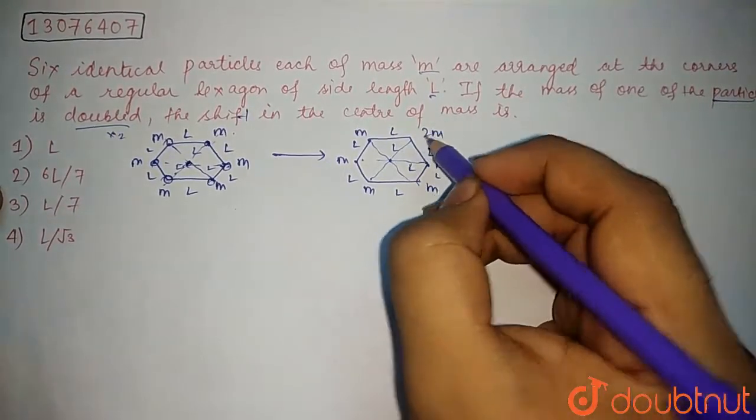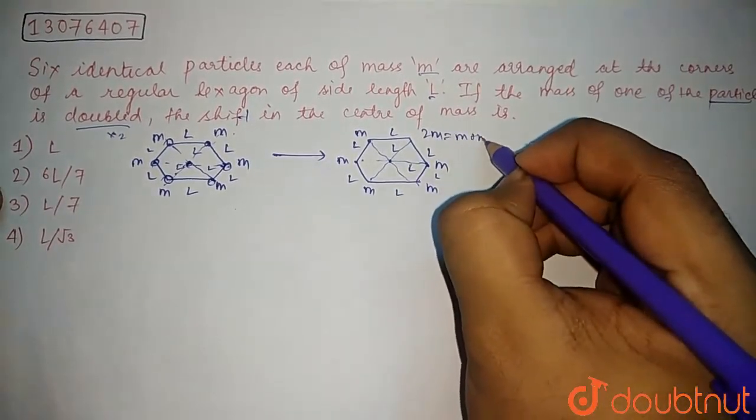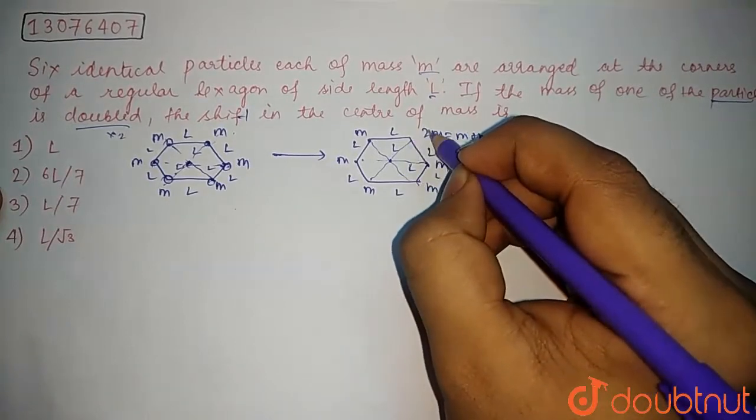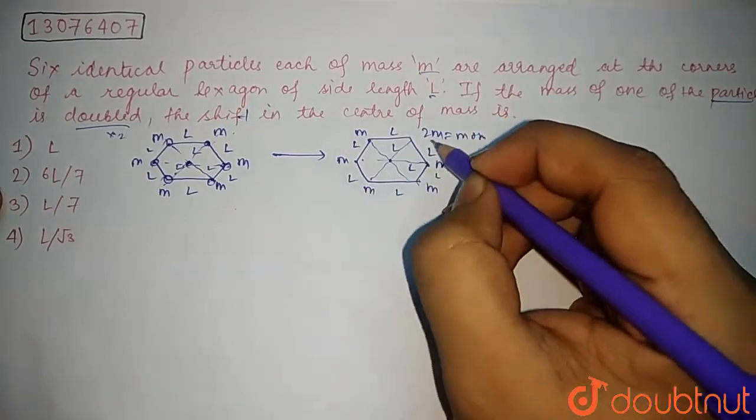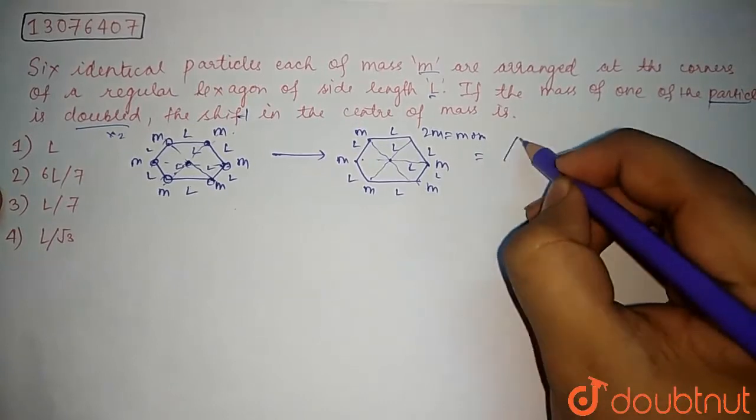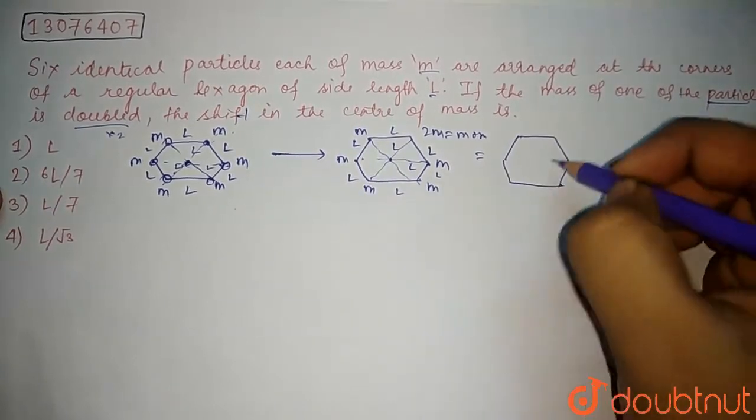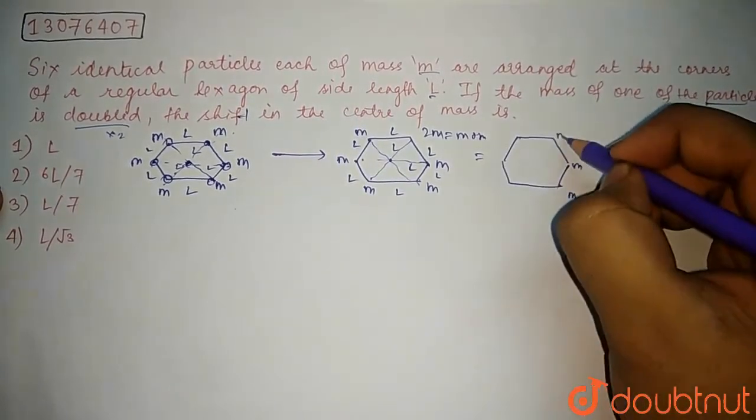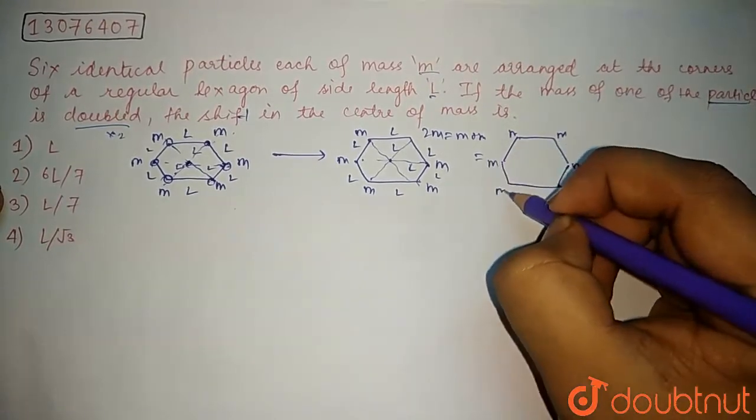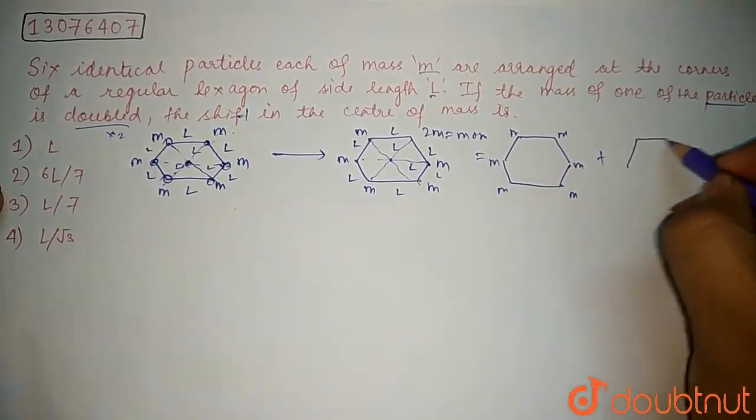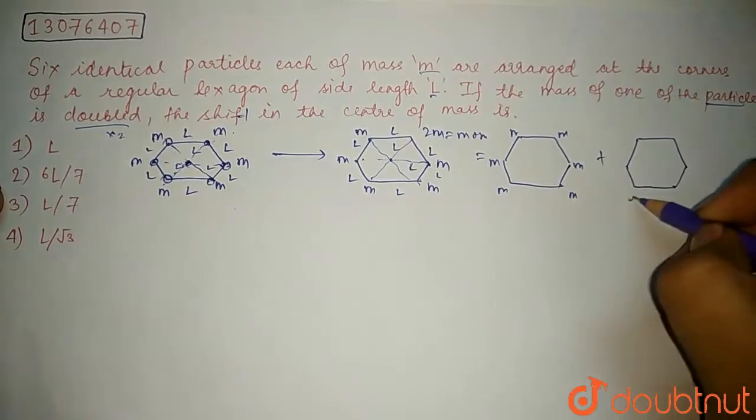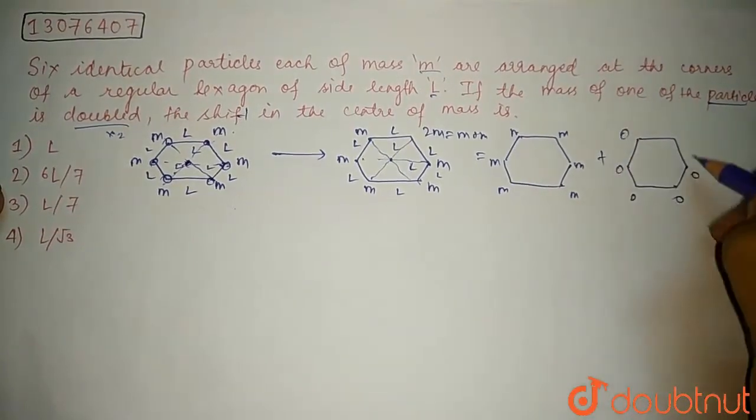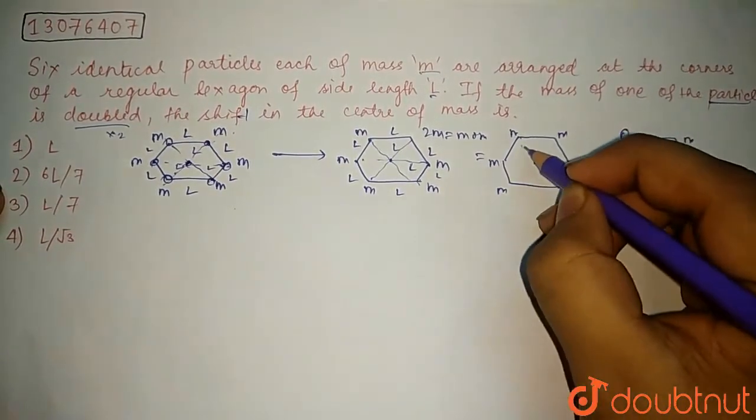So we can say M plus M, M plus M, all the M's, we can say M, M, M, M, M, plus we can say here zero, zero, zero, zero, zero and one M. We can say this.